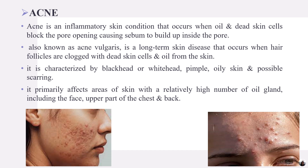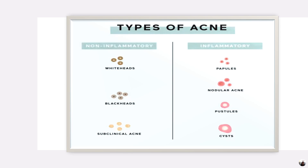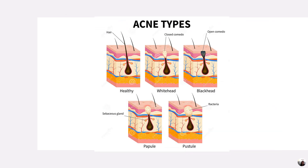Acne is associated with oily skin and possible scarring. It primarily affects areas with a relatively higher number of oil glands, including the face, upper chest, and back. Types of acne include non-inflammatory types — whiteheads, blackheads, and subclinical acne — and inflammatory types — papules, nodular acne, pustules, and cysts. You can see images showing healthy skin, whitehead condition, blackhead condition, papules, and pustules.